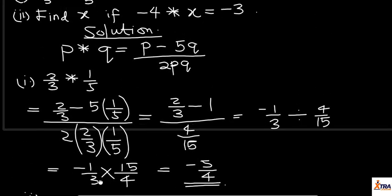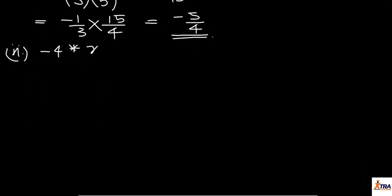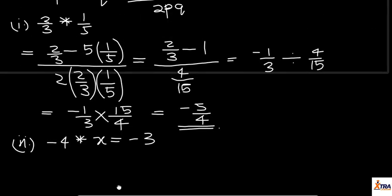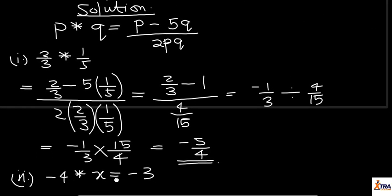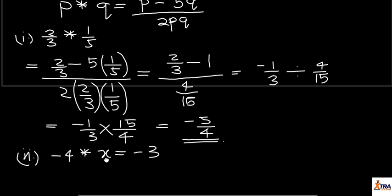We have minus 4 operation x equals to minus 3. And from our formula, from our relation, remember that our P operation Q is P minus 5Q over 2PQ. It means minus 4 operation x will simply be, our P now is minus 4 and our Q is x.